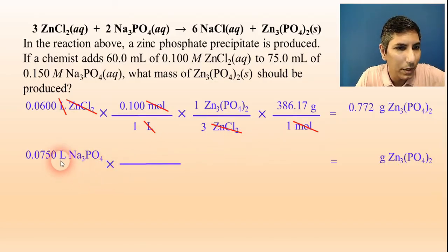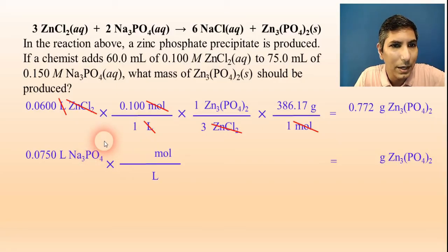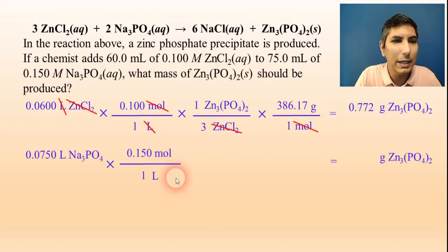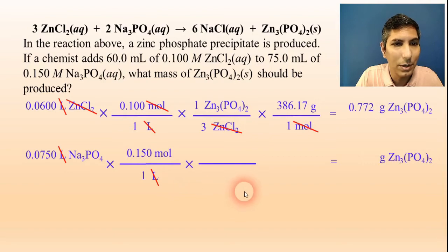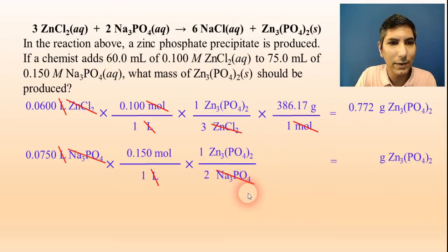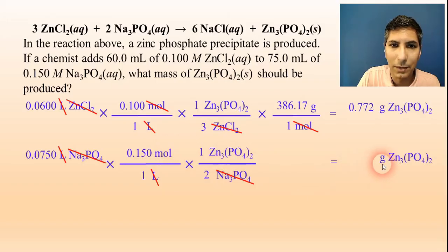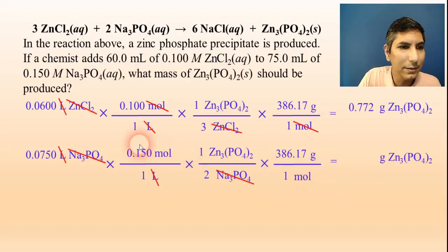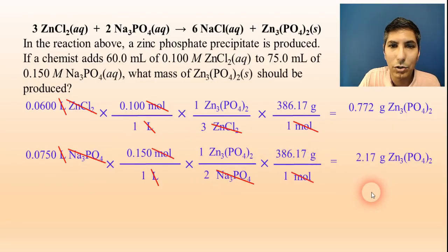In my next process, I have to convert to moles. Liters on the bottom, moles on top. I'm using the concentration of sodium phosphate here. It says that I have 0.150 molar sodium phosphate. So, that means 0.150 moles per liter. Liters are out. My second step is the mole ratio. Sodium phosphate on the bottom and zinc phosphate on the top. And this is a 1 to 2 mole ratio according to the coefficients of the balanced equation. My sodium phosphate is out. And now, I'm in moles of zinc phosphate. I want to be in grams of zinc phosphate. So, once again, convert to grams. Moles on bottom, grams on top. It's still 386.17 grams in a mole of that. Now, I calculate and take 0.075 times 0.15 divided by 2 times 386.17. And the answer I get here is 2.17.